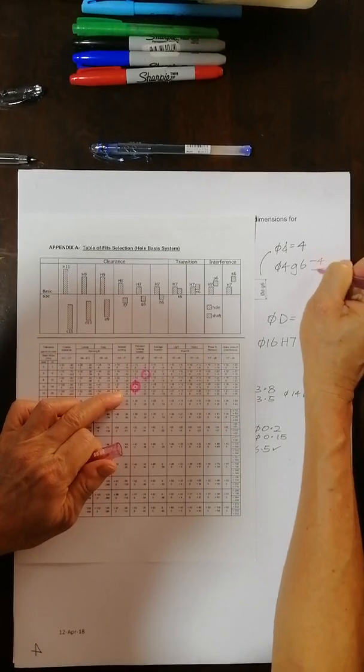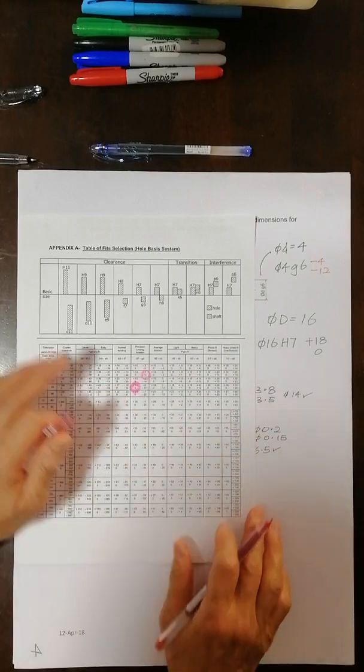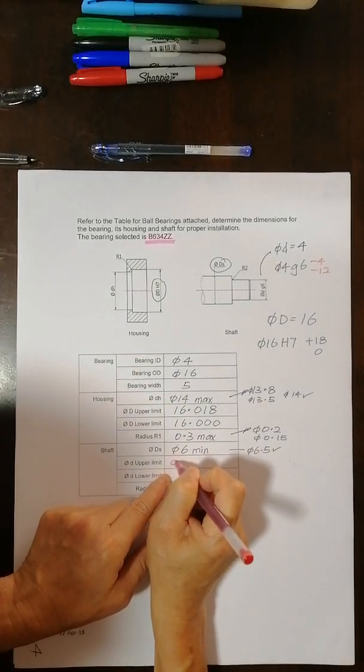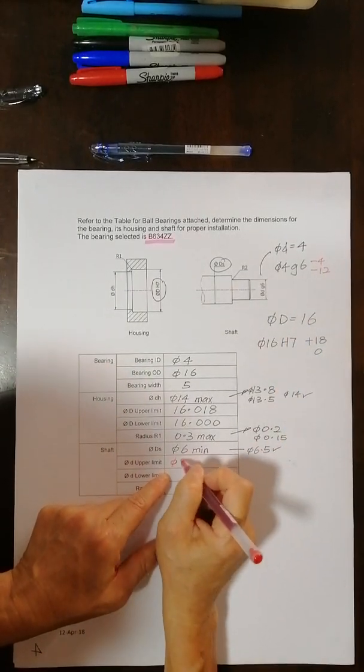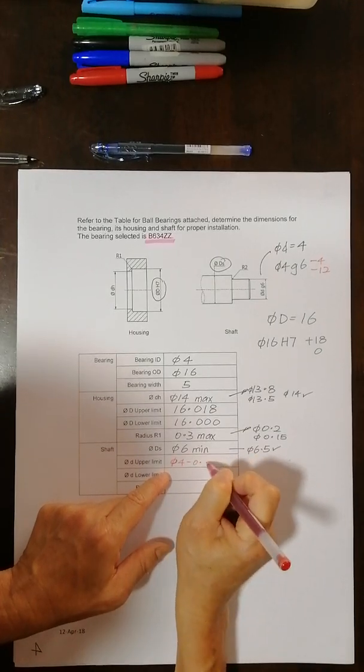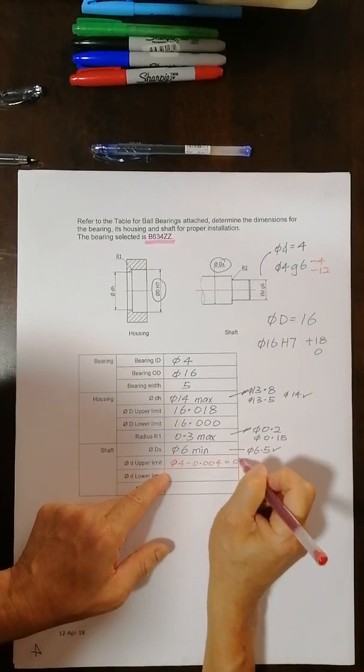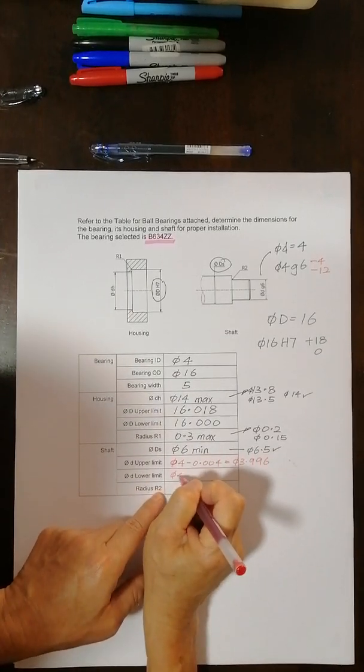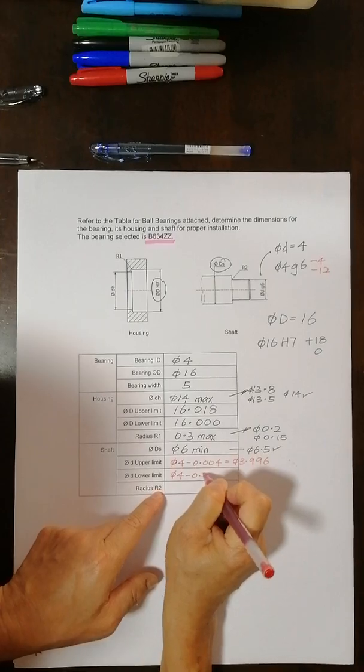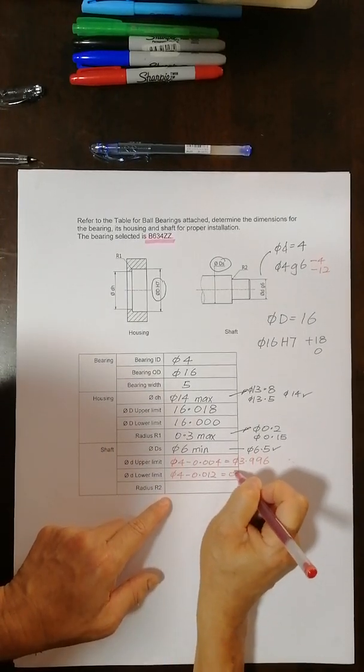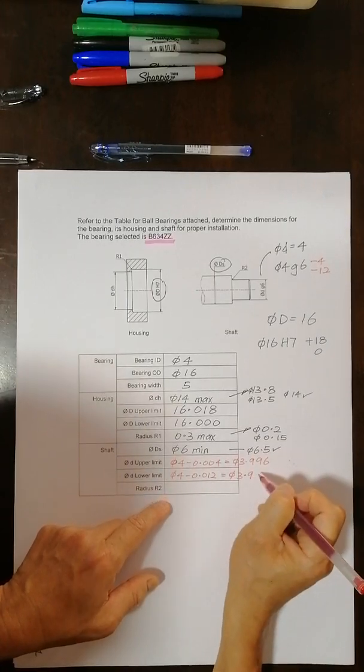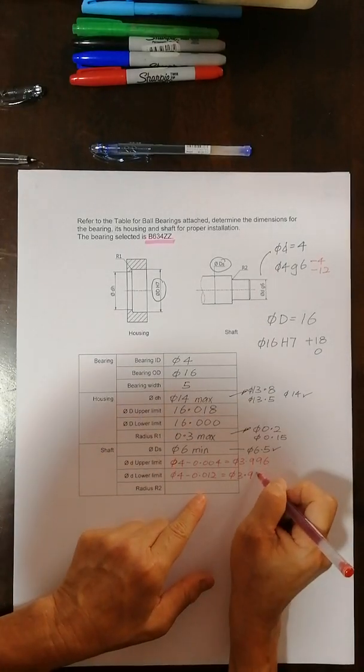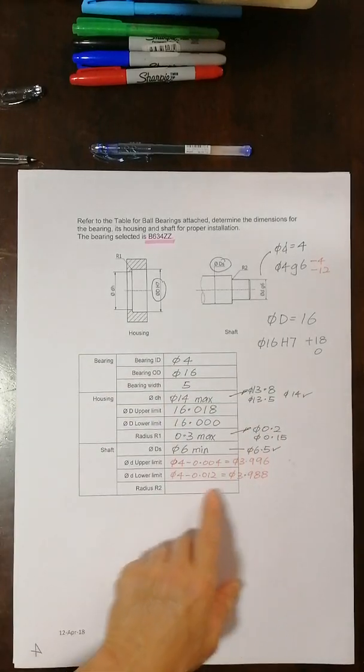The number here is minus 4 minus 12. So let's put the number here now. This will be diameter 4 minus 0.004, so this will be diameter 3.996. And lower limit is diameter 4 minus 0.012. This will give me diameter 3.9... 8.8 is it? Yeah, 3.988. Yeah correct, 8.8.